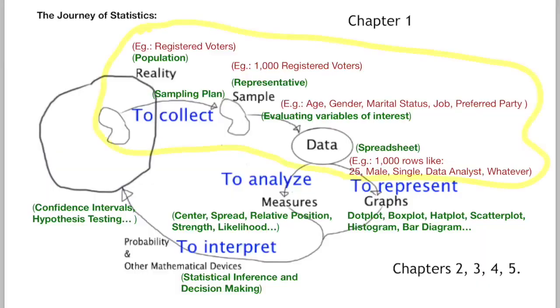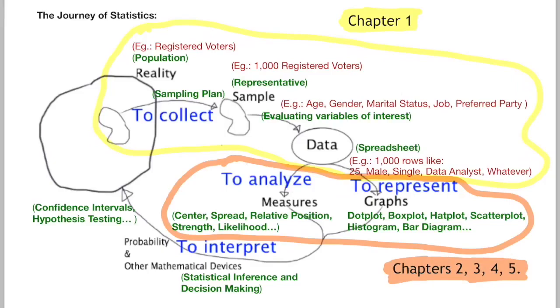This section about collecting the data is covered in chapter 1. We will speak about different sampling plans and we will discuss how to design a well-controlled experiment as opposed to an observational study. All this section is covered in chapters 2, 3, 4 and 5. We will see how to analyze and represent a single variable and how to analyze and represent the relationship between two variables, when they are numerical and categorical.